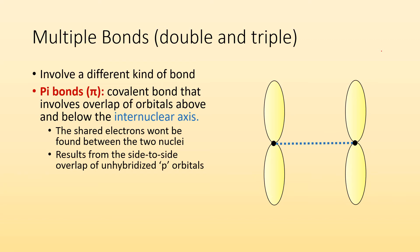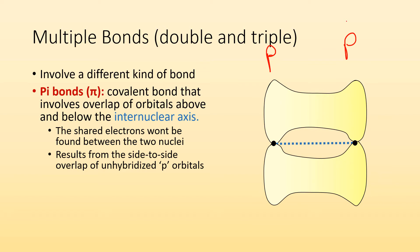So these pi bonds result from the side-to-side overlap of unhybridized p orbitals. You can see in the picture we have two unhybridized p orbitals, and they're going to do a side-to-side overlapping — they're going to kind of loop together. And that is one pi bond. Because we have it above and below the internuclear axis, that is an example of a pi bond.